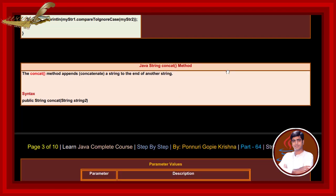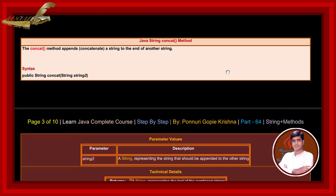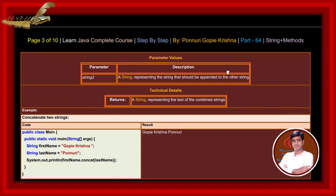Java string concat method. The concat method appends — concatenates — a string to the end of another string. See the syntax: public String concat(String string2). The parameter string2 is a string representing the string that should be appended to the other string.